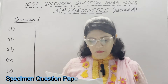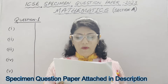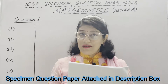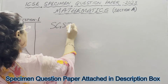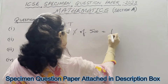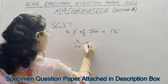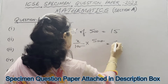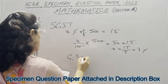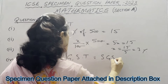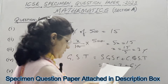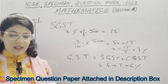We start with Part 1: SGST paid by a customer to the shopkeeper for an article priced at rupees 500 is rupees 15. Let x percent of rupees 500 equal 15, so x/100 multiplied by 500 equals 15, meaning 5x equals 15, so x equals 3 percent. But they asked for GST, which is SGST plus CGST, so 3 plus 3 equals 6 percent. The correct option is D, which is 6 percent.